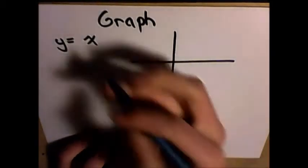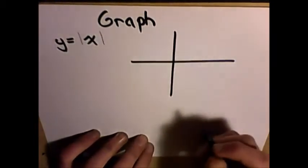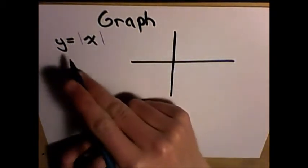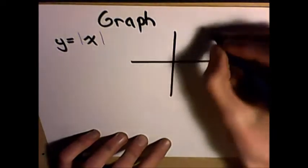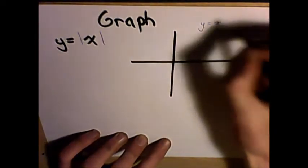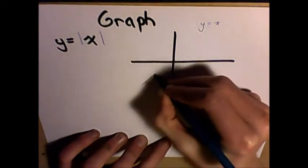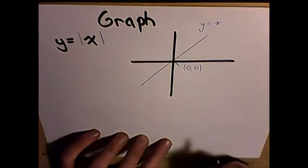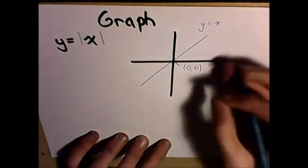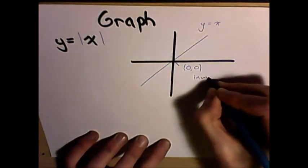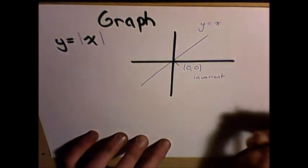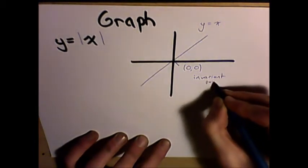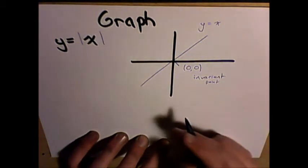But what if we have to graph an absolute value? Well, let's start by just graphing the standard equation. Here we know that the line of y equals x is simply a straight line that passes through the coordinates 0 and 0. We'll call this coordinate the invariant point. Now, the invariant point is basically just the x-intercept.